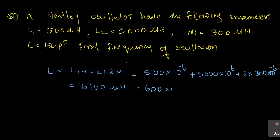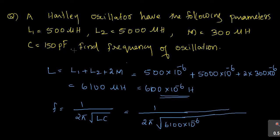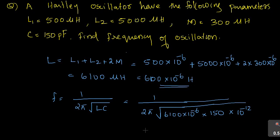6100×10⁻⁶ henry. The frequency of oscillation is f = 1/(2π√(LC)), where L = L1+L2+2M = 6100×10⁻⁶ henry, and C = 150 picofarad = 150×10⁻¹² farad. After multiplying and simplifying, the answer is 166.38 kHz.